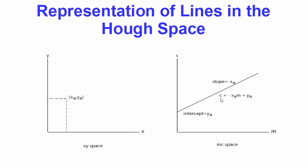The formula now turns into: c = -x_a · m + y_a. So if you have the x and y coordinates of a point, in MC space you can represent it as a line, where -x becomes the slope and y becomes the intercept. Earlier m was the slope and c was the intercept, but when you transform a point into MC space, -x becomes the slope and y becomes the intercept.